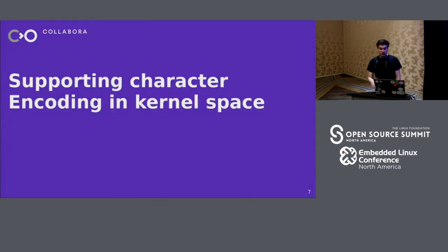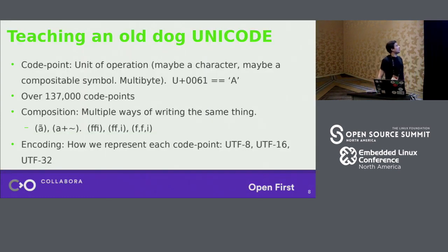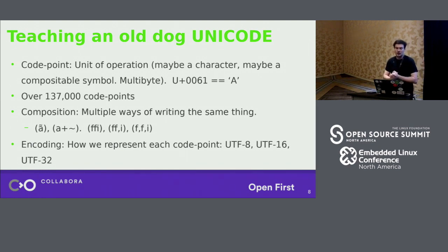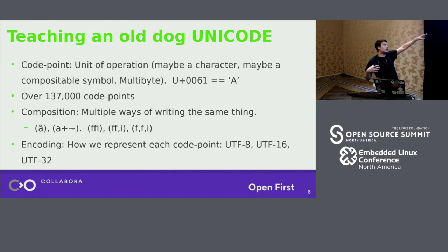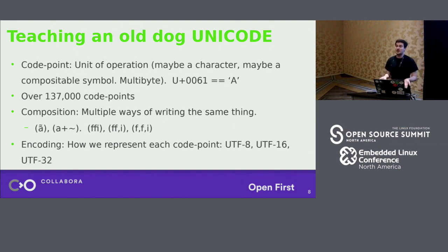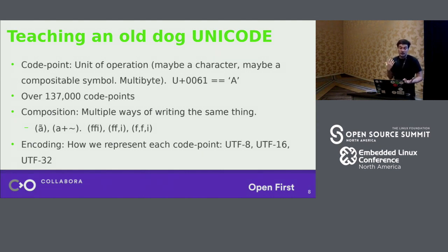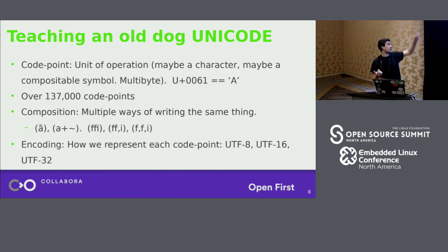So I started by teaching the kernel Unicode. How do you teach Linux Unicode? Basically just a quick overview: Unicode is composed of code points, which is our unit of operation - we are not talking about characters, we are talking about code points. They are very similar to characters but they have some caveats; they can be multi-byte. A is U+0061, which is compatible with ASCII. But you can have characters that are four bytes long, for instance. You have over 100,000 code points already assigned in Unicode, and the Unicode folks can go up to millions. In Unicode you have this character A-with-tilde, which can be written as that single character or as a composition of two characters, A composed with a tilde character.